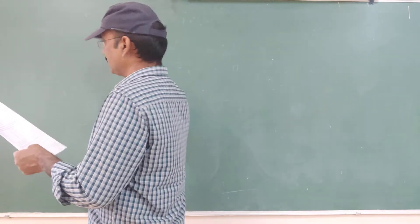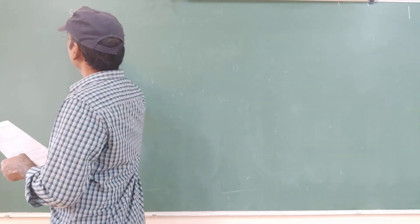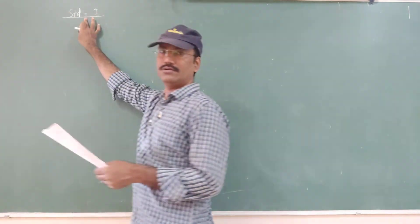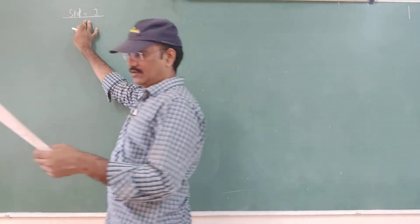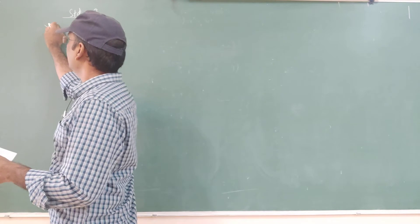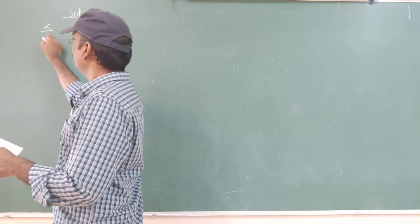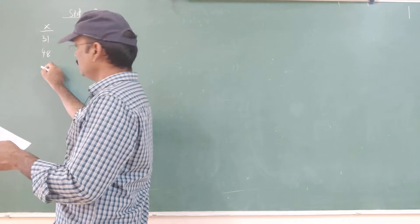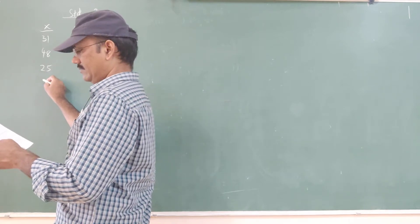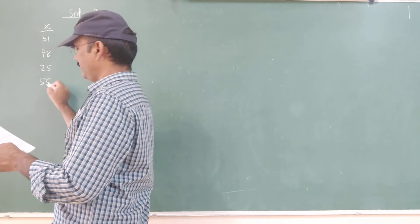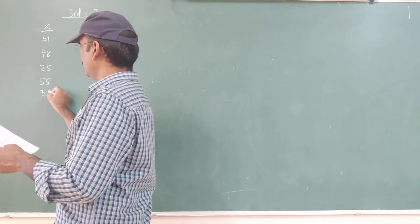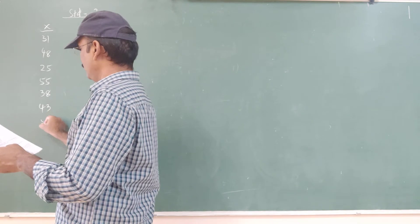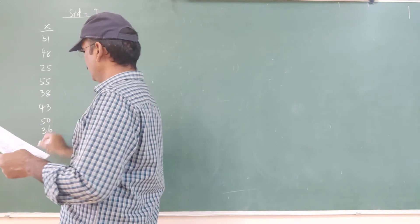I will write the question like this. For Standard 1, the variable X values are: 31, 48, 25, 55, 38, 43, 50, 36.